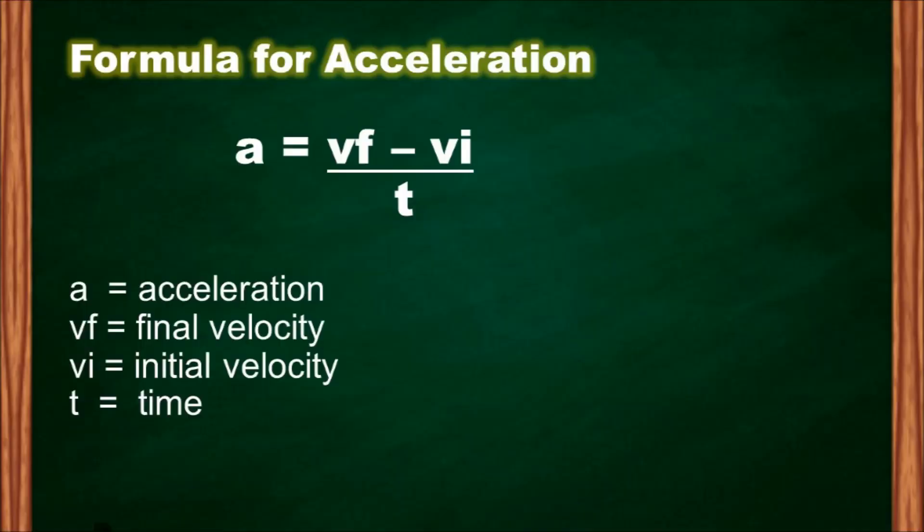This is the formula for acceleration: a is equal to vf minus vi over t, where a is for acceleration, vf is the final velocity, vi is the initial velocity, and t is for time.